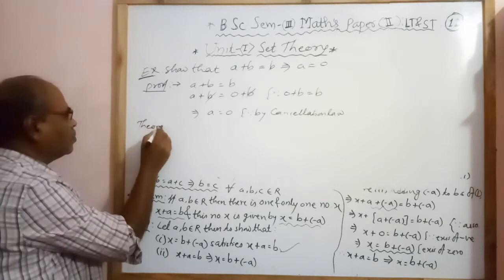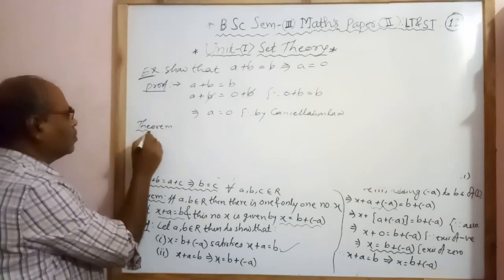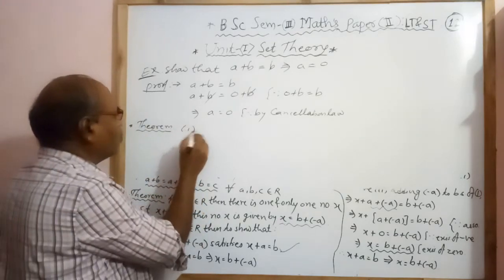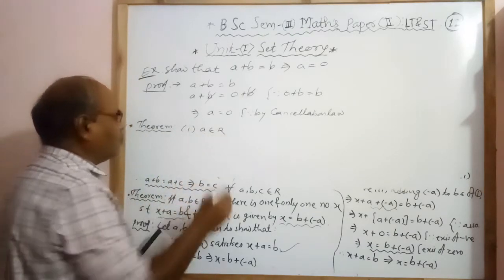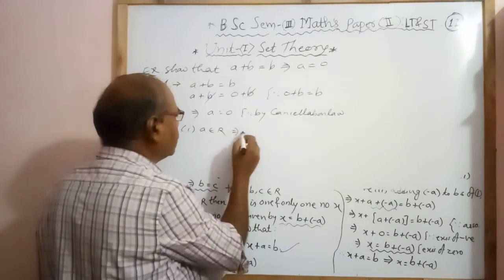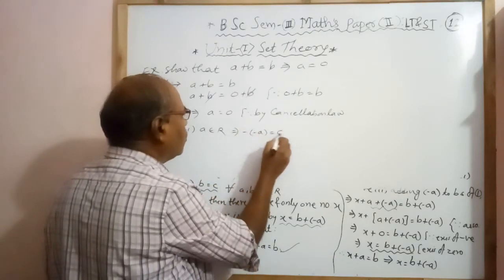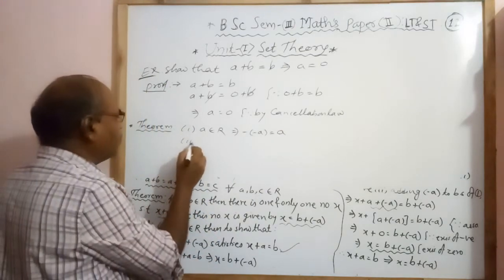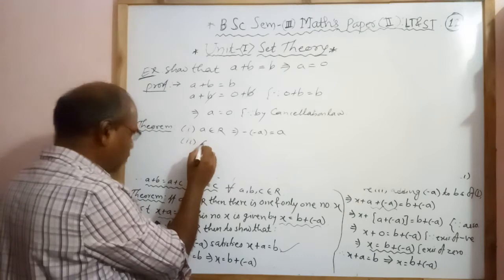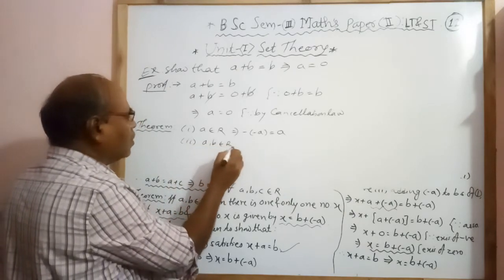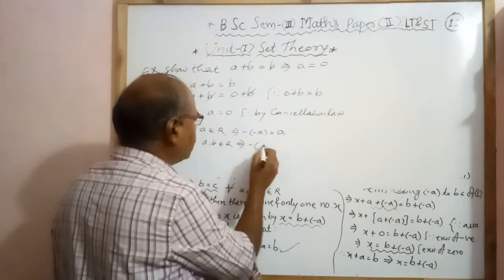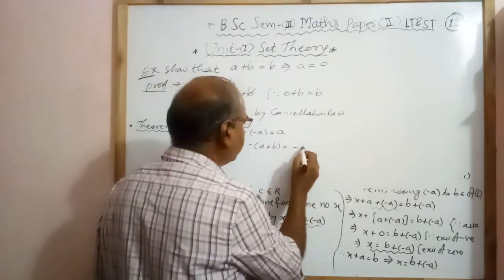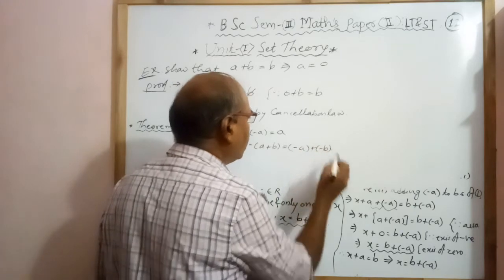Now I will take the next theorems. First: if A belongs to R, then minus of minus A equals A. Second: if A, B belong to R, then minus of A plus B equals minus A plus minus B.